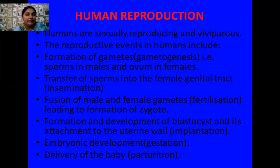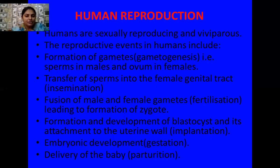The third event is the fusion of the male and female gamete to form a zygote, known as fertilization. The zygote is a diploid structure, as gametes are haploid. Then the formation and development of the blastocyst takes place. The blastocyst attaches itself to the inner wall of the uterus, which is known as the endometrium, and this process is called implantation.